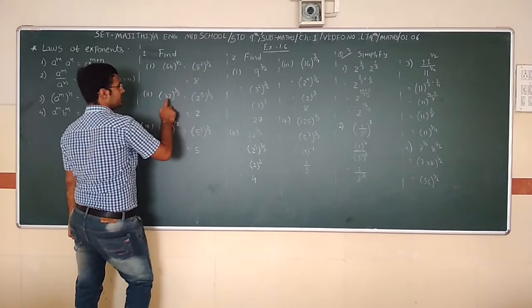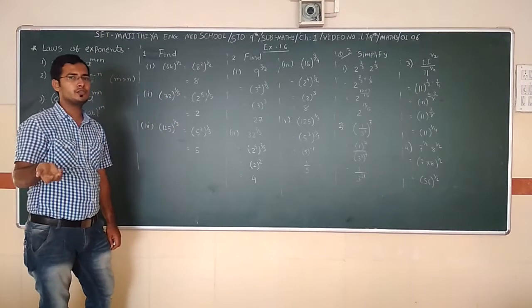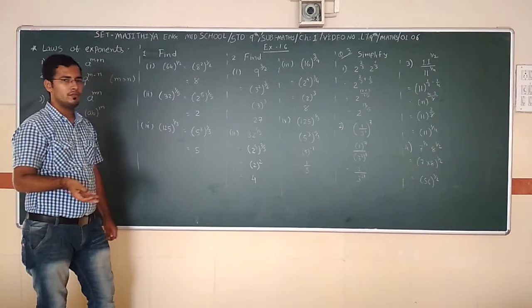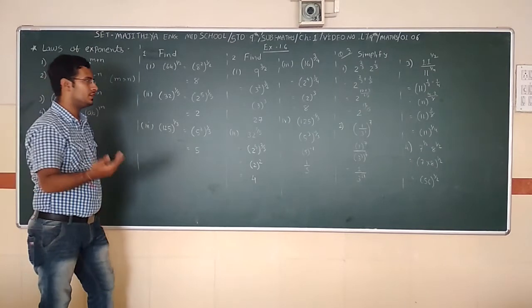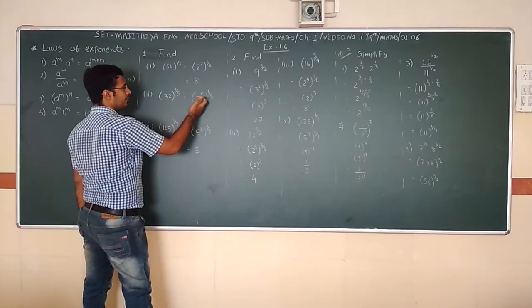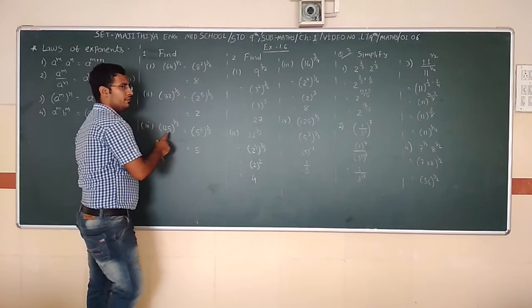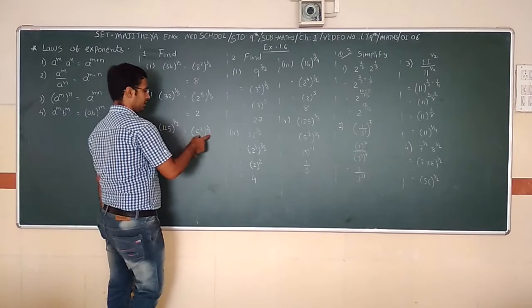Next, 32^(1/5). We have to convert it to raise to 5. So 2×2=4, 4×2=8, 8×2=16, 16×2=32. So 2^5 = 32. Therefore (2^5)^(1/5), the 5 cancels, giving 2^1 = 2.